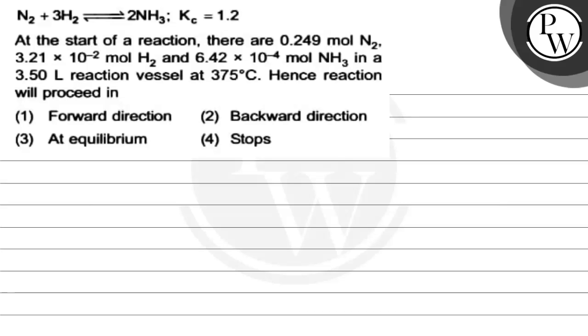Hello, let's read this question. N2 plus 3H2 forms 2NH3, and Kc is given as 1.2. At the start of reaction there are 0.249 moles of N2, 3.21 × 10^-2 moles of H2, and 6.42 × 10^-4 moles of NH3 in a 3.5 liter reaction vessel at 375 degrees Celsius.